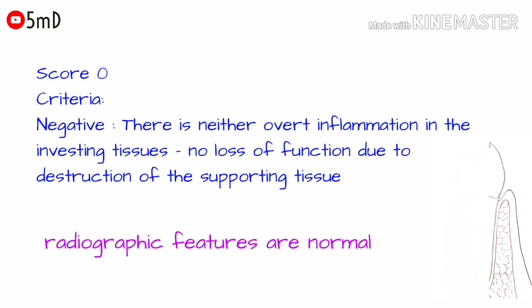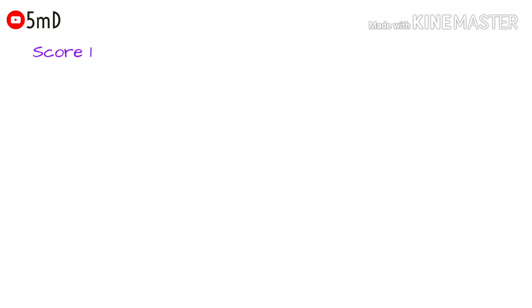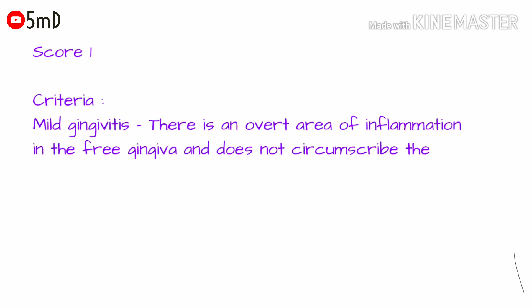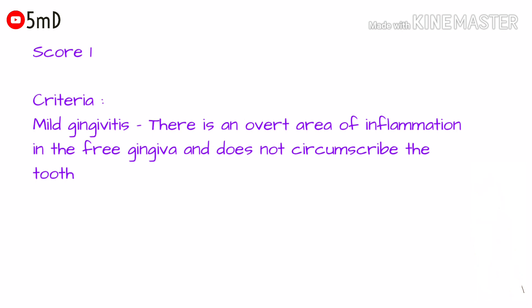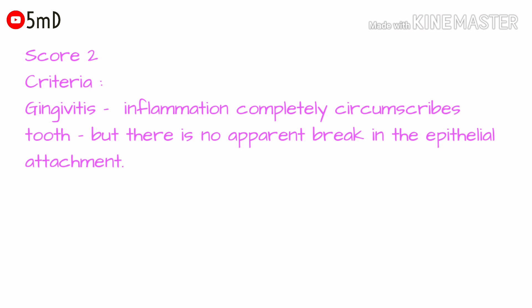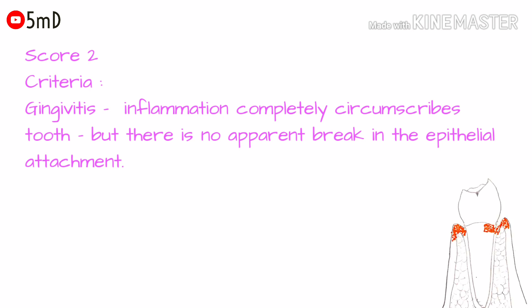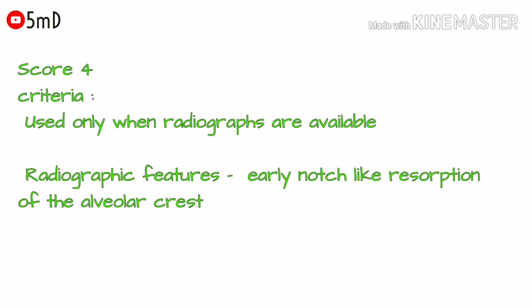When there is mild gingivitis — when there is an overt area of inflammation in the free gingiva but the inflammation does not circumscribe the tooth — it is considered mild gingivitis and a score of one is given. When the inflammation completely circumscribes the tooth but the epithelial attachment has no break, we give a score of two. In radiographic features we can see an early notch-like resorption of the alveolar crest.